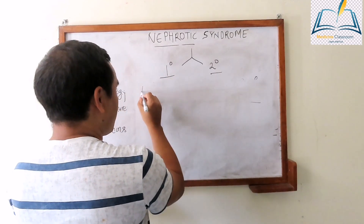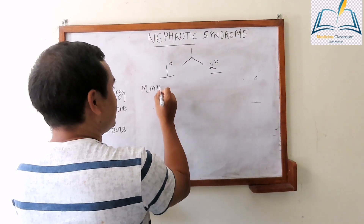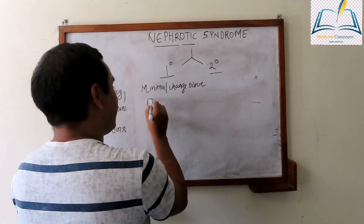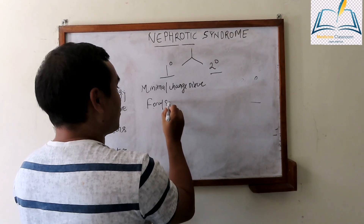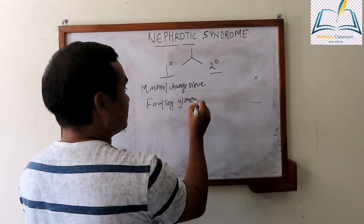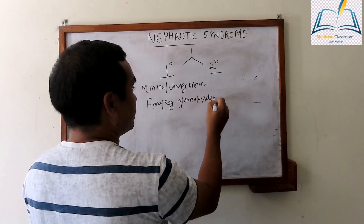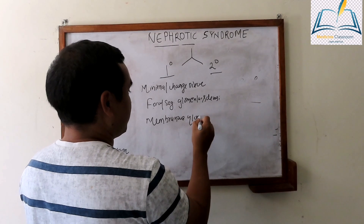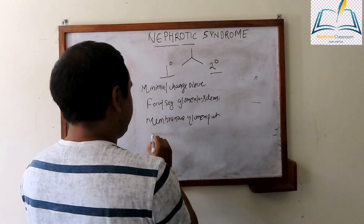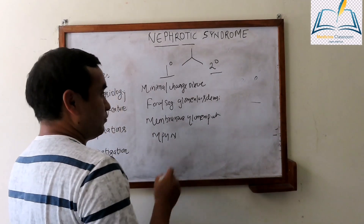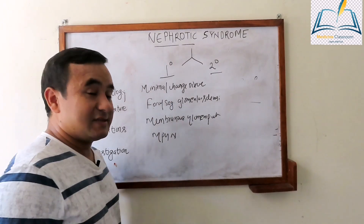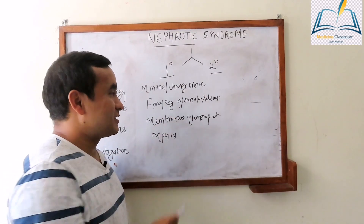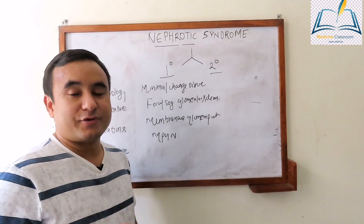Primary nephrotic syndrome: commonly we see minimal change disease in children, though it can also occur in adults. Similarly, focal segmental glomerular sclerosis (FSGS), membranous glomerulopathy, and membranoproliferative glomerulopathy are also primary causes. Minimal change disease is the most common type of primary nephrotic syndrome in children, and focal segmental glomerular sclerosis is the most common type of primary nephrotic syndrome in adults.